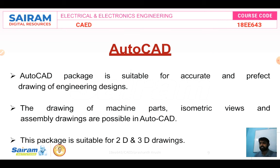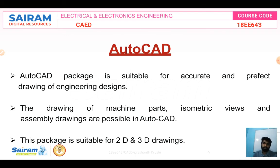We have already learned Solid Edge software, where we covered isometric projection, align points, and so on. Here, the same concept applies — for example, if I give a three-phase transformer or single-phase transformer, core type or shell type, and if I cut that, how exactly the overall design looks from the top — for that we use AutoCAD. This package is suitable for both 2D and 3D drawing.